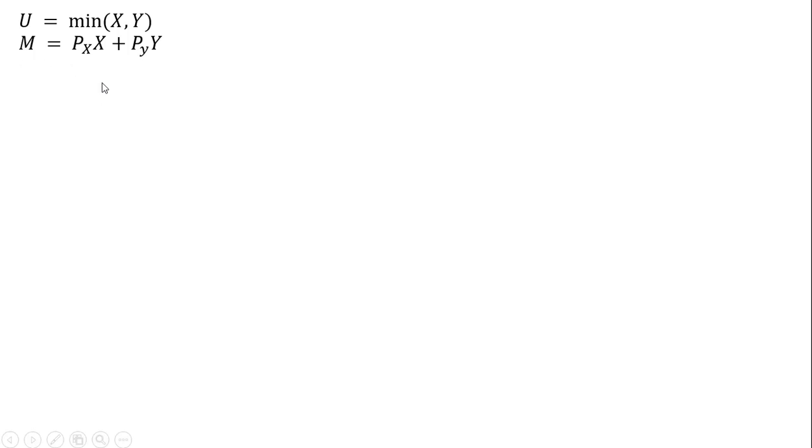So this is a consumer's budget constraint. And in equilibrium, the consumer will consume an equal proportion of X and Y, such that X will equal Y, given this utility function.